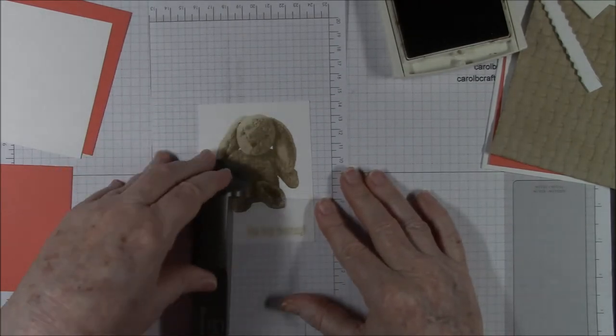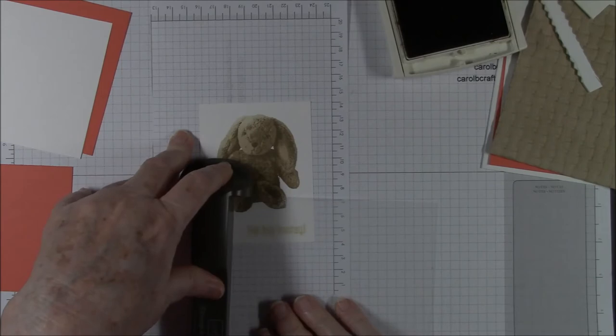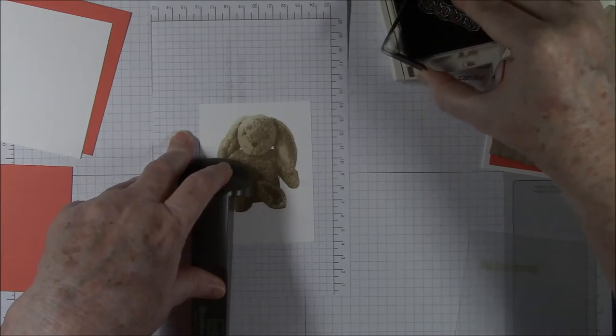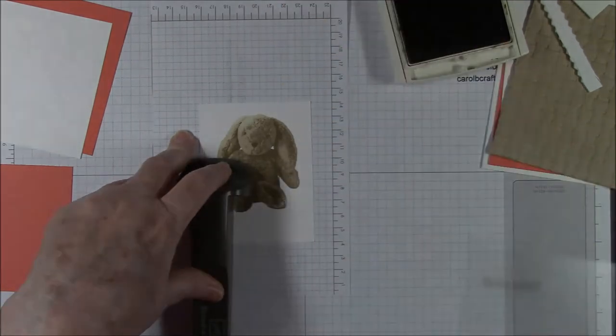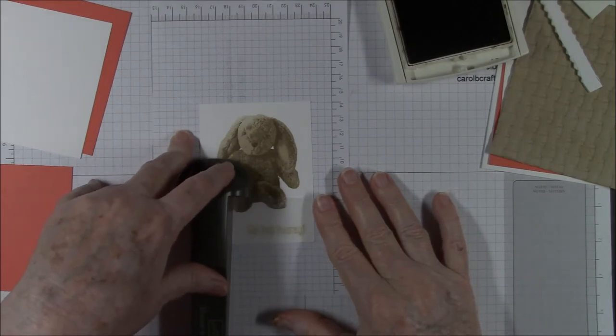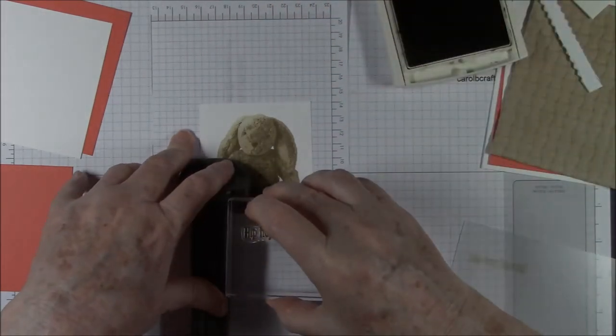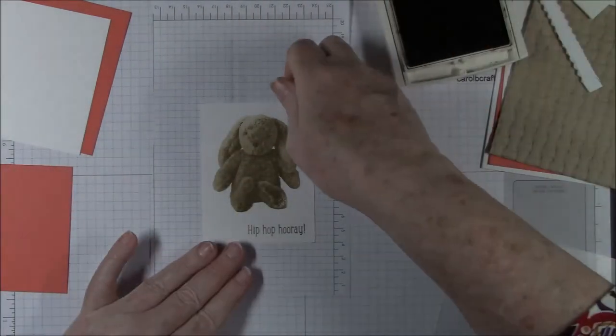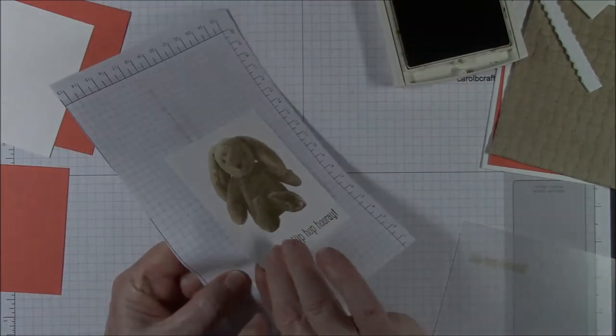And now I think I can put it here in place. Looks good. Hip Hop Hooray. That's such a cute saying. I can never talk and do something at the same time. It's hard for me. Okay, hold that in place and stamp down and up. And now that's finished, ready to go on top of the piece of Calypso Coral.